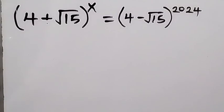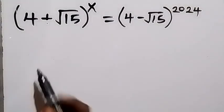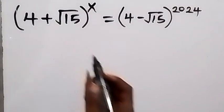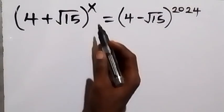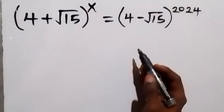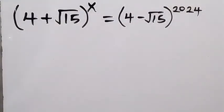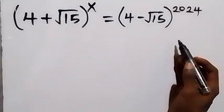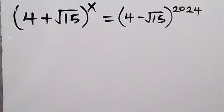Hello, you are welcome. How to solve this math olympiad problem: we have 4 plus root 15, then all raised to power x, equals to 4 minus root 15 raised to power 2024.